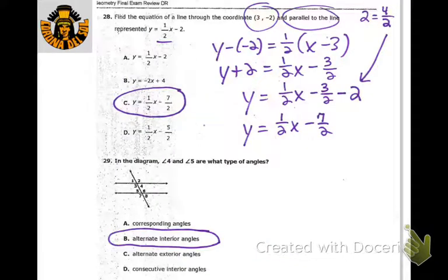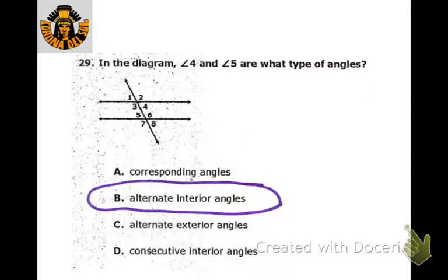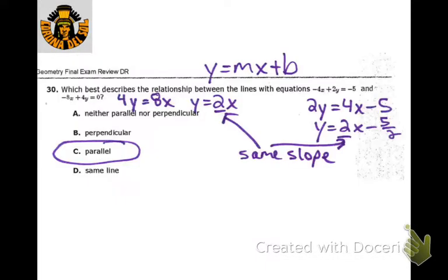We want to write an equation that's parallel — so we've got slope 1/2 — and then we use that point and do point-slope form like we've done before. Angles 4 and 5 are alternate interior angles, and they're always congruent if the lines are parallel.